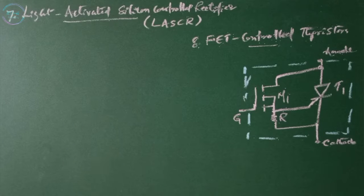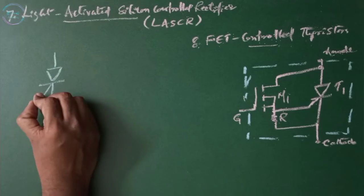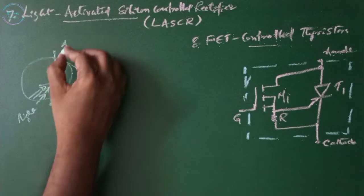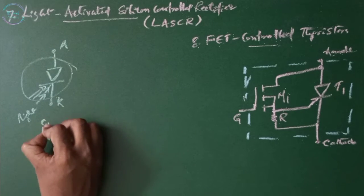Light activated silicon controlled rectifier or LASCR. This device is turned on by direct radiation on the silicon wafer with light. Electron hole pairs which are created due to the radiation produce triggering current under the influence of electric field. The gate structure is designed to provide sufficient gate sensitivity for triggering from practical light sources.